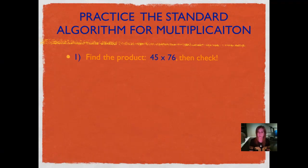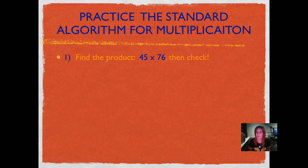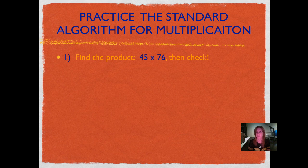Now we're going to do some practice problems. Remember, you can always pause it, go back, and re-watch it, especially when I'm doing examples or explaining how we worked the problem. You can also write your questions in your journal and ask me tomorrow. Find the product 45 times 76, then check using digital root. Go ahead and pause it and push play when you're ready.